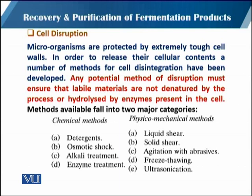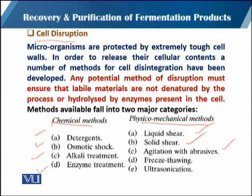When we separate soluble and insoluble fractions, if the product is intracellular, we proceed to cell disruption. For cell disruption there are different chemical methods and physio-mechanical methods. Chemical methods include: detergent, osmotic shock, alkali treatment, and enzyme treatment. Physical and mechanical methods include: liquid shear, solid shear, agitation with abrasive, freeze-thaw, and ultrasonication. These are the methods mostly used for cell disruption.